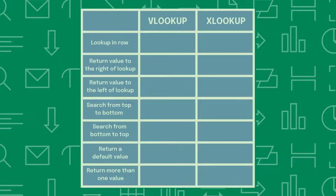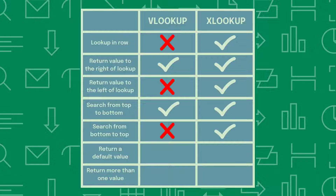To wrap things up, XLOOKUP is a modern successor to VLOOKUP because it can search rows or columns, return values in any direction from the lookup value, search from the first or last value of the data, return a default value if an exact match isn't found, return multiple results, and more. It's pretty safe to say that XLOOKUP has replaced the iconic VLOOKUP function. If you enjoyed this three-part series on VLOOKUP vs XLOOKUP, hit that like button, comment below, and subscribe to our channel for more series just like this. Thank you.